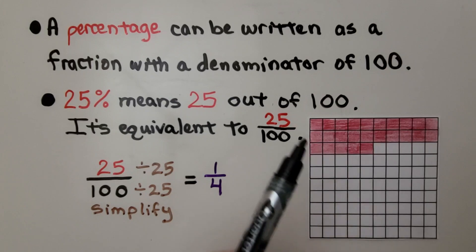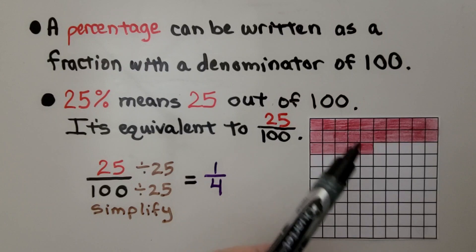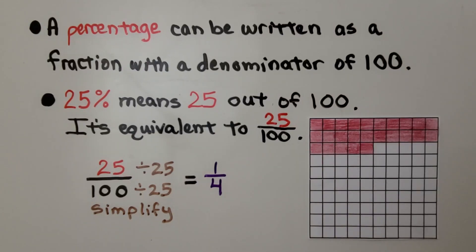We have a 10 by 10 grid and 25 are shaded in. That's 25 of 100. That's 25% of the grid is shaded in. And we can simplify 25 hundredths by dividing by the greatest common factor, 25. And we see it's equal to one-fourth. That tells us one-fourth is equal to 25%.